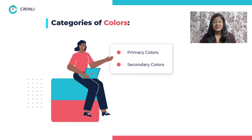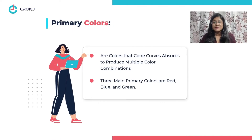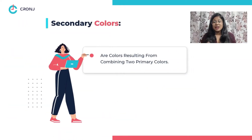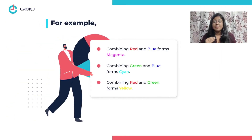Colors are broadly categorized into two groups: primary and secondary colors. Primary colors refer to the colors that the cone cells absorb differently to produce various color combinations. The three main primary colors include red, green, and blue. Secondary colors refer to those colors reproduced by combining any two of the primary colors — for example, magenta is formed by combining red and blue, cyan is formed by combining green and blue, and yellow is formed by combining red and green.